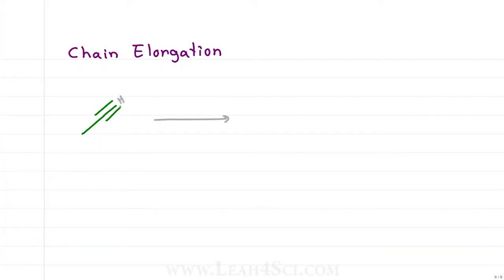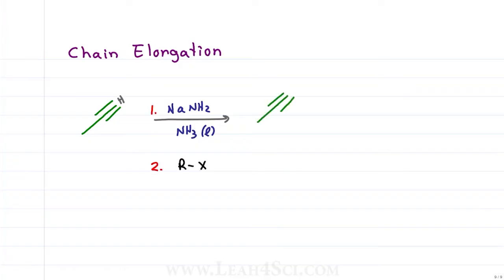Last for alkynes, we have chain elongation: if you react a terminal alkyne with NaNH2 in liquid ammonia followed by an alkyl halide, the alkyne will add to the alkyl halide to give us a longer carbon chain.